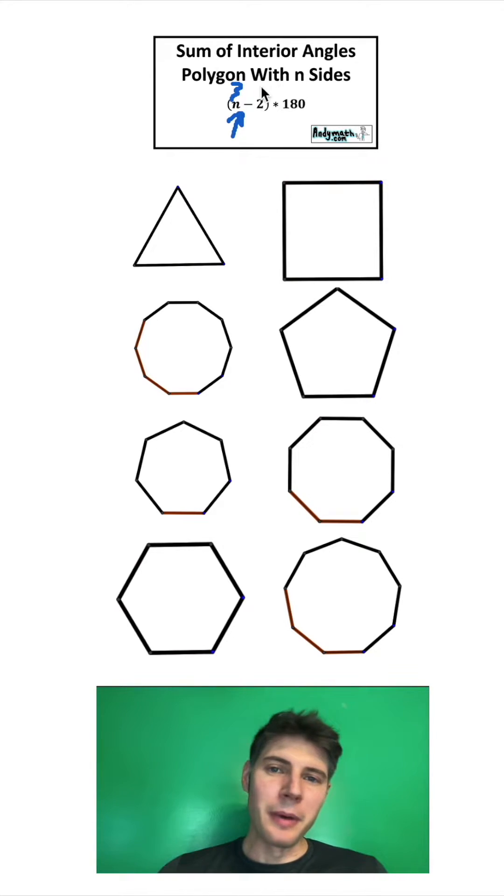For triangles, for example, if we plug a 3 in for the n, 3 minus 2 is 1, 1 times 180 tells us that these three angles add up to 180 degrees.